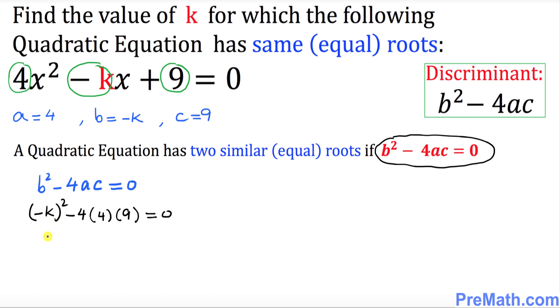So negative k squared simply becomes k squared minus 144 equal to zero. Let's move this negative 144 on the other side, so this is going to become k squared equal to positive 144.